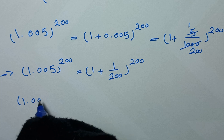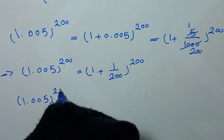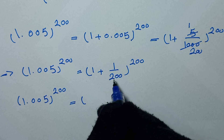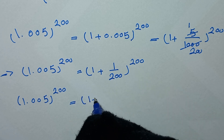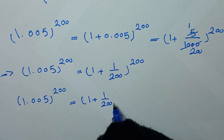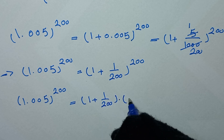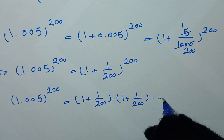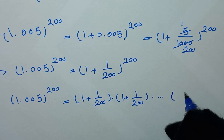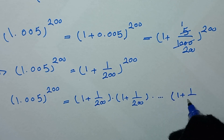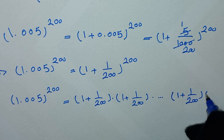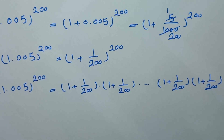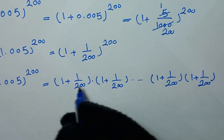So 1.005^200 equals (1 + 1/200)^200. We can expand this as (1 + 1/200) × (1 + 1/200) × (1 + 1/200) ... multiplied 200 times.